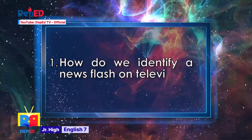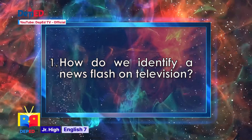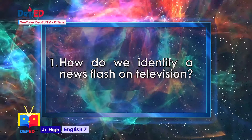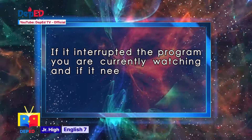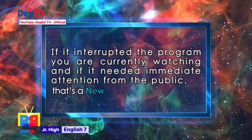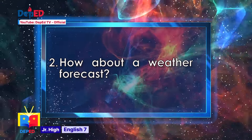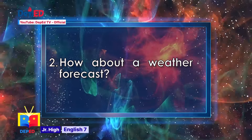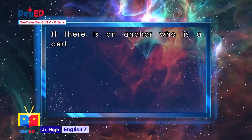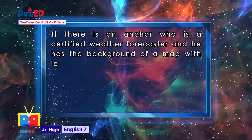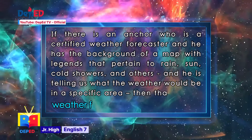How do we identify a newsflash on television? If it needed immediate attention from the public, that's a newsflash. How about a weather forecast? If there is an anchor who is a certified weather forecaster, and he has the background of a map with legends that pertain to rain, sun, cold showers, and others, and he is telling us what the weather would be in a specific area, then that is a weather forecast.